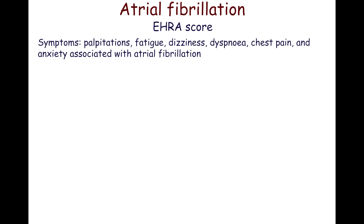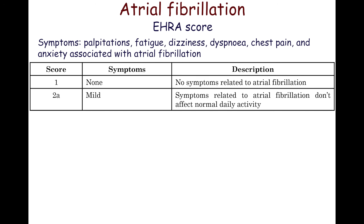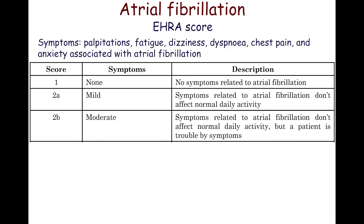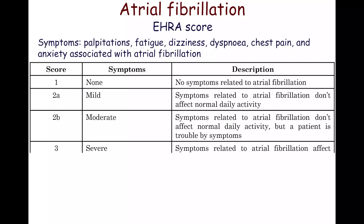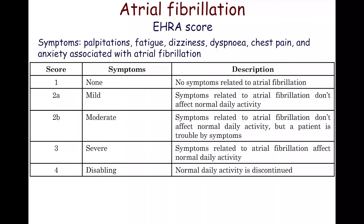Depending on symptom severity, atrial fibrillation is classified according to the EHRA score. Score 1 means the patient is completely asymptomatic. Score 2a means symptoms do not affect normal daily activity. Score 2b indicates symptoms do not affect normal daily activity, but the patient is troubled by them. Score 3 means symptoms affect normal daily activity. Score 4 indicates disabling symptoms.